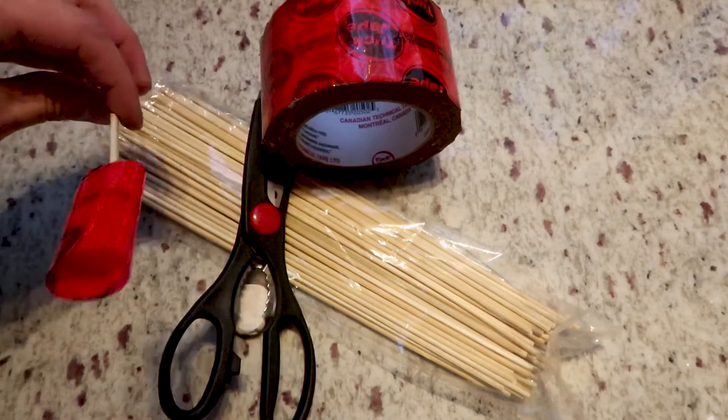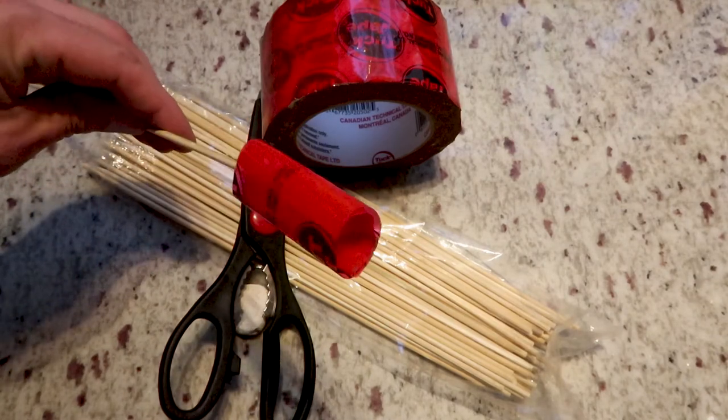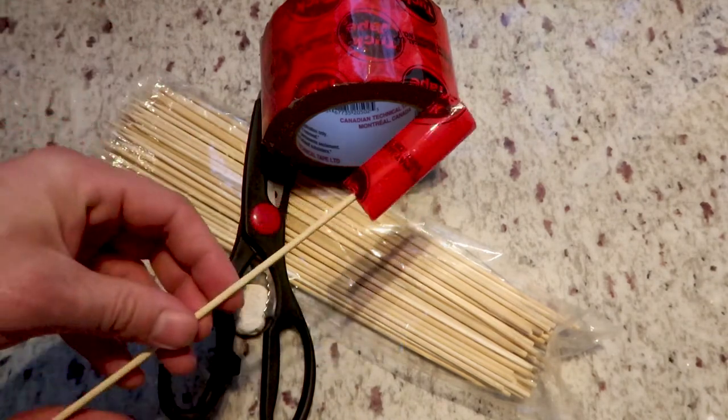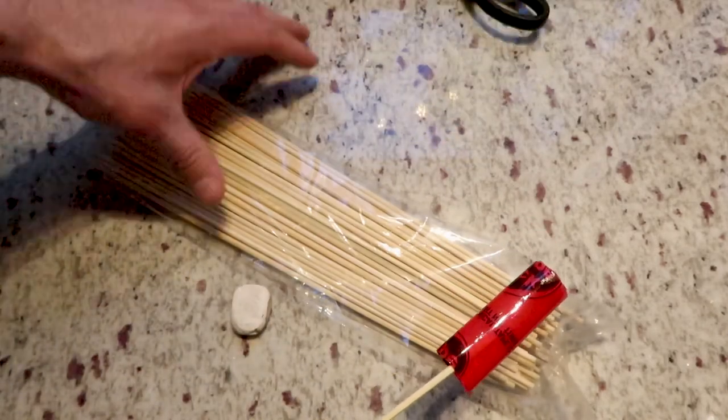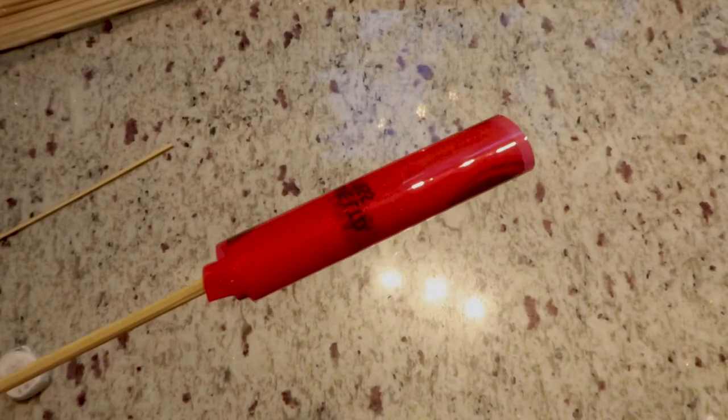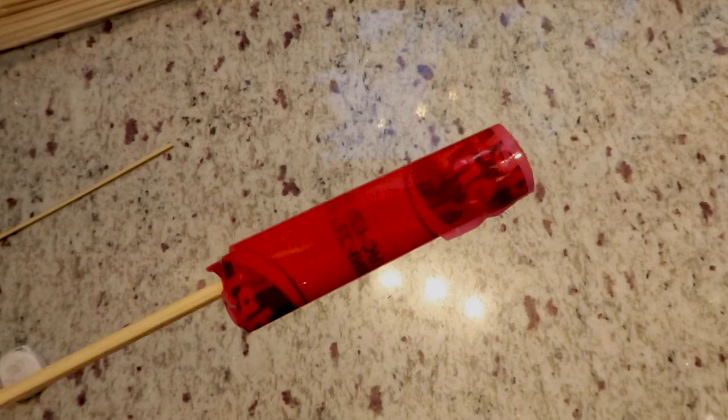Now you have essentially a tape roll on the end of a bamboo skewer, and the skewer is halfway into the tape roll. The sticky side of the tape is facing outward.